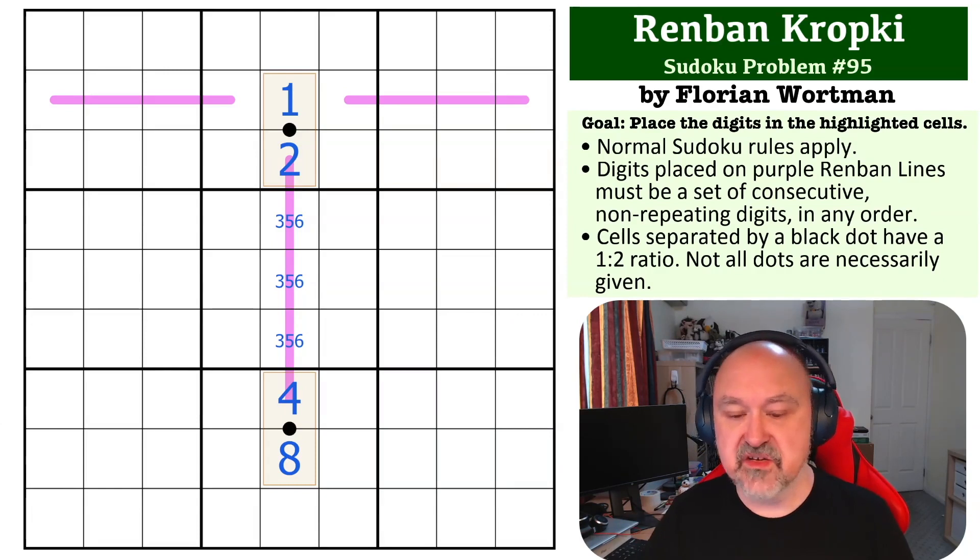You've got to use the pressure of the renban and the dots together. That's true with all of the problems, but the secret is figuring out this cell and then using this renban to figure out the same limitations. Really nice little problem. It breaks the constraints open quite well. I really do like this one. Thank you Florian for sending it through.